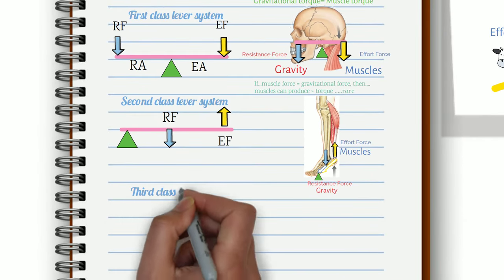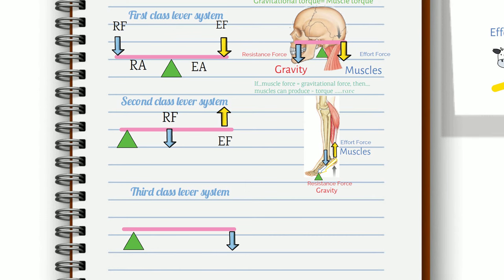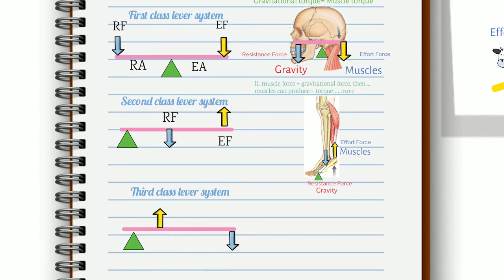Finally let's take a look at the third class lever system. There are two main features. The axis of rotation is once again at the end of the lever. And now the resistance force is further away from the axis of rotation than the effort force.